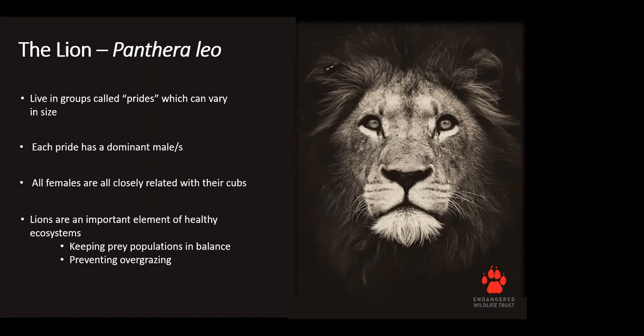Like other carnivores, lions are an important element of healthy ecosystems. Because they prey on other animals, they help keep populations in check and prevent overpopulation. Through this hunting, carnivores maintain populations of browsers and grazers, and as such they prevent their overabundance and protect vegetation from being too heavily grazed or browsed.